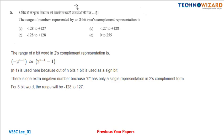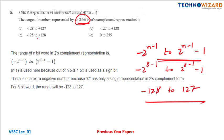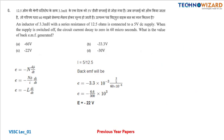Question number five: the range of numbers represented by an eight-bit two's complement system. The range is minus 2 to the power n minus 1 to 2 to the power n minus 1, minus 1. For eight bits, this is minus 2 to the power 7 to 2 to the power 7 minus 1, giving minus 128 to 127 as the correct answer.